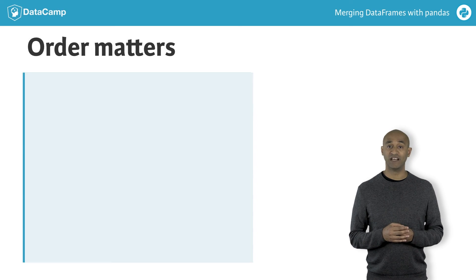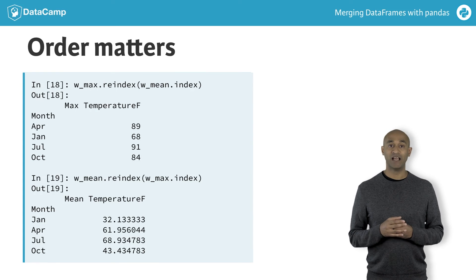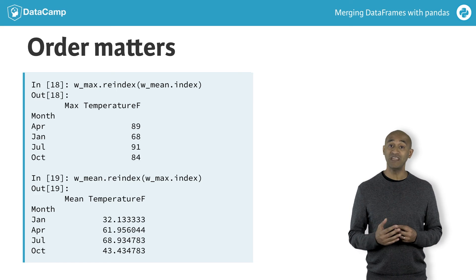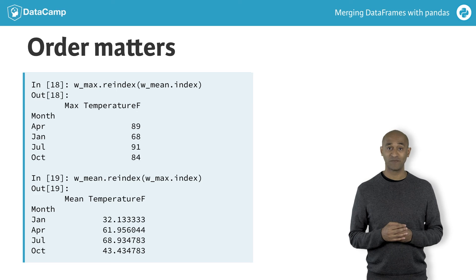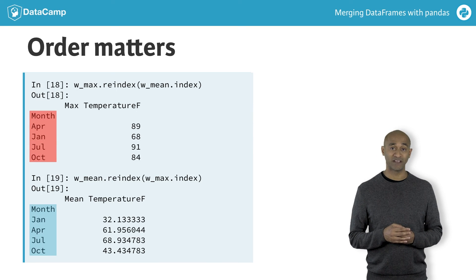Finally, we should realize that order counts. That is, W_max.reindex(W_mean.index) is not the same as W_mean.reindex(W_max.index). The latter fixes the row order as desired in W_mean, while the former replicates the misleading alphabetical row order in W_max — which is likely not desired.